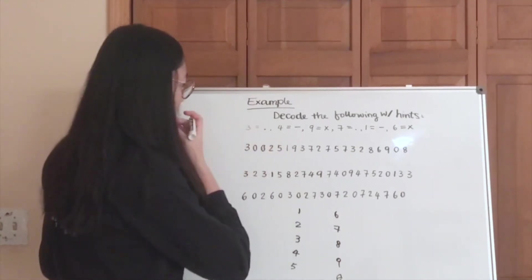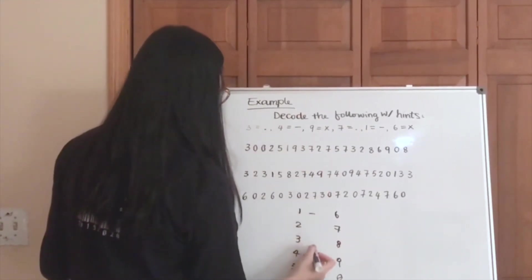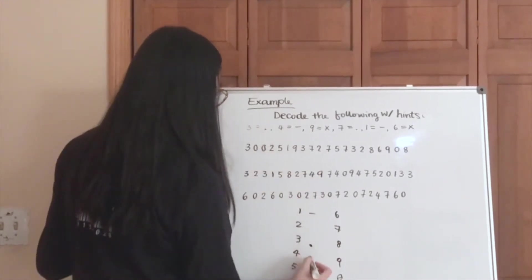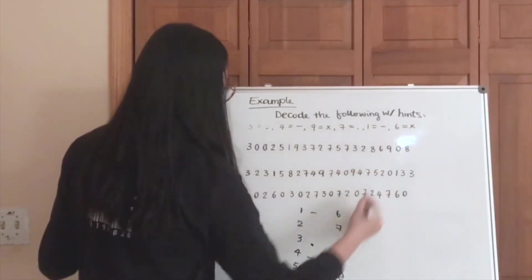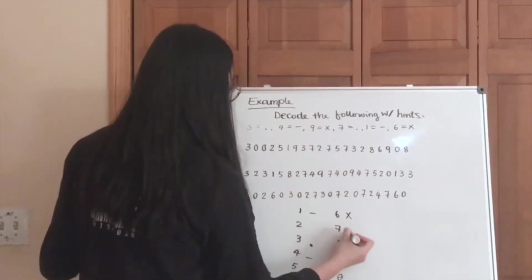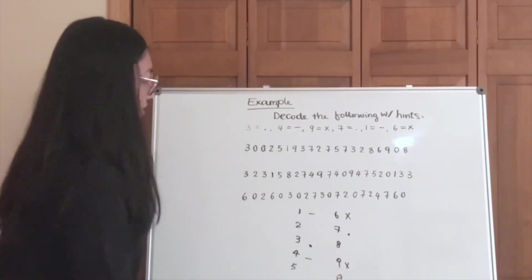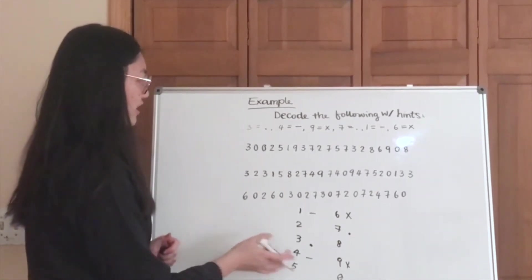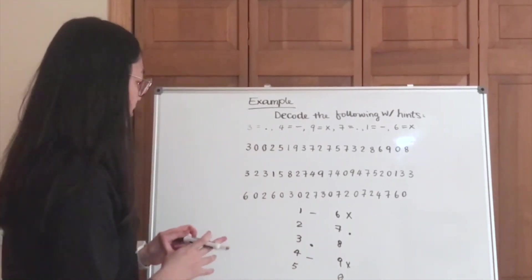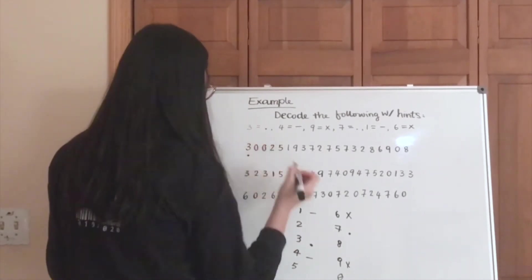So from the hints, we know that one is a dash, three is a dot, four is a dash, six is a space holder, seven is a dot, and nine is another space holder. So now we are going to put these into the jumble of numbers and see what information we can get out of it.